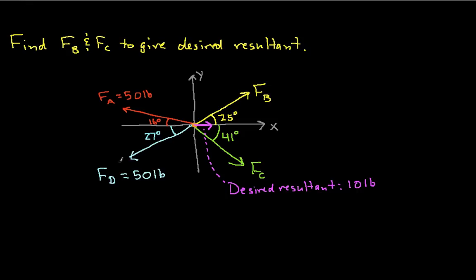Suppose that we still know that the magnitude of Fa and the magnitude of Fd are 50 pounds. We now don't know the magnitude of Fb. We know the angle that it will be applied, but we don't know what magnitude it has. And the same for Fc. We know the angle that it will be applied at, but we don't know its magnitude.